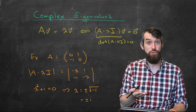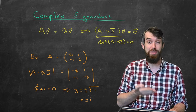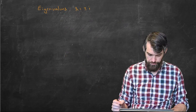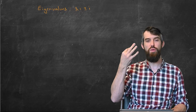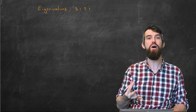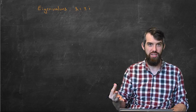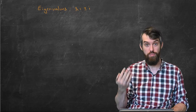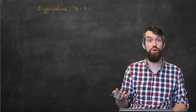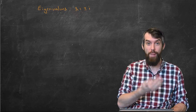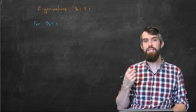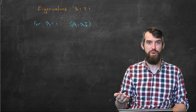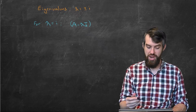So those are the eigenvalues. Now what about the eigenvectors? There's going to be an eigenvector corresponding to lambda equal to plus i, and there's going to be an eigenvector corresponding to lambda equal to minus i. Let's study lambda one equal to i first.